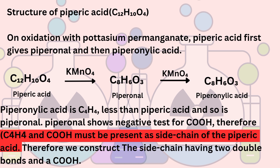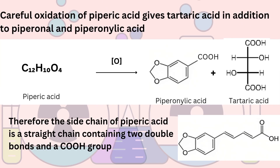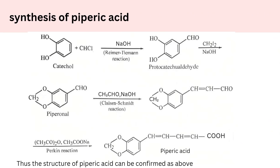Careful oxidation of piperic acid yields tartaric acid in addition to piperonil and piperonilic acid. Therefore the side chain of piperic acid is straight, and we can assume its structure accordingly. The structure is confirmed by synthesis: catechol is treated with sodium hydroxide to give protocatechualdehyde, which is then treated with diiodomethane and sodium hydroxide to give piperonil, and further reaction gives piperic acid. We can now confirm the structure of piperic acid.